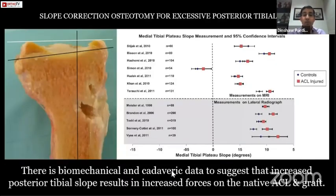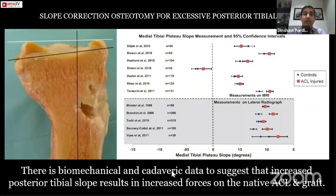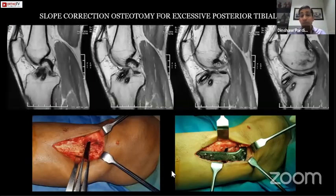Finally, excessive posterior tibial slope. Numerous biomechanical and cadaveric studies show that increased posterior tibial slope results in increased forces on both the native ACL and an ACL graft. I'm not necessarily suggesting slope correction in every primary ACL case, but if a patient presents with a failed ACL reconstruction and you find an increased tibial slope, identify it and discuss slope correction with the patient — otherwise the revision ACL is also likely to fail. In this patient with varus and increased tibial slope, we've had to perform a slope correction with a medial opening wedge osteotomy.